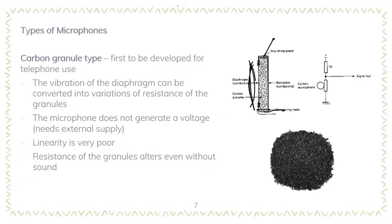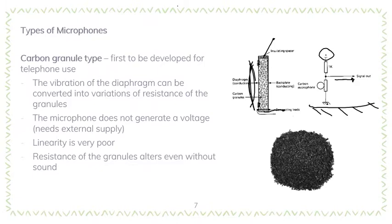This type of sensor converts sound waves into a change in resistance, meaning this circuit cannot generate its own voltage and needs an external power supply. It is used with a circuit that has a power source, and the carbon microphone serves as a potentiometer. The signal is dependent on the change in resistance, which produces a change in output voltage. This system has very poor linearity, which is why it is not commonly used.